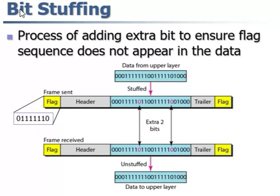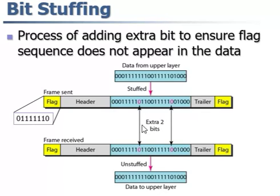Next, bit stuffing. This is the process of adding extra bits to ensure the flag sequence does not repeat. Here we see the sequence 0, 1, 1, 1, 1, 1, 0. In order not to repeat the sequence, we add an extra bit — say a 0 bit. Same as in the case of byte stuffing, we added an extra bit, and the data is received in the same fashion.